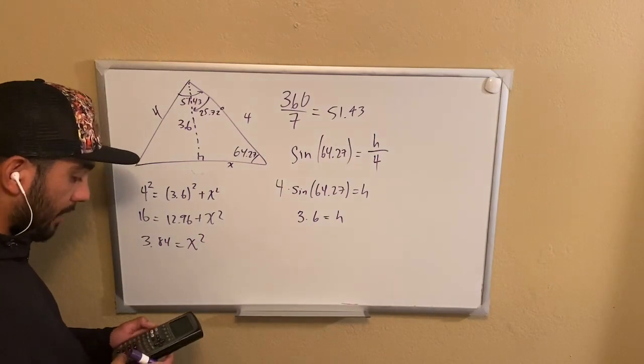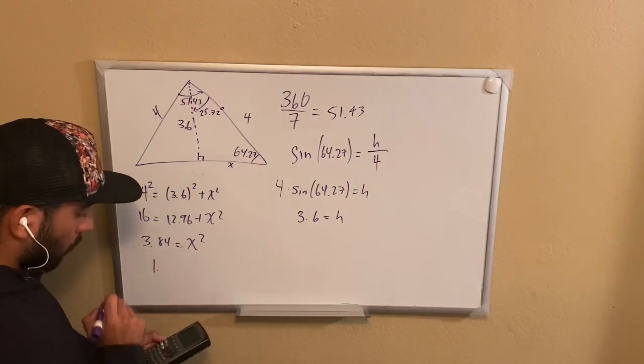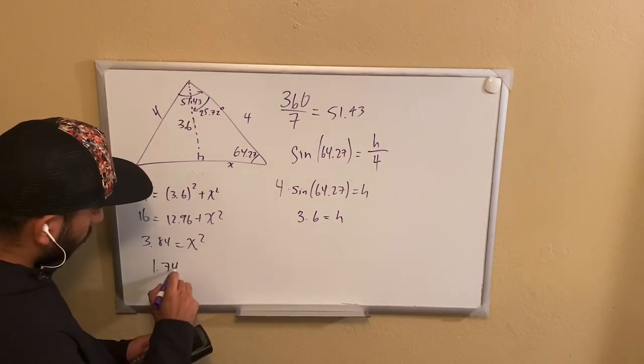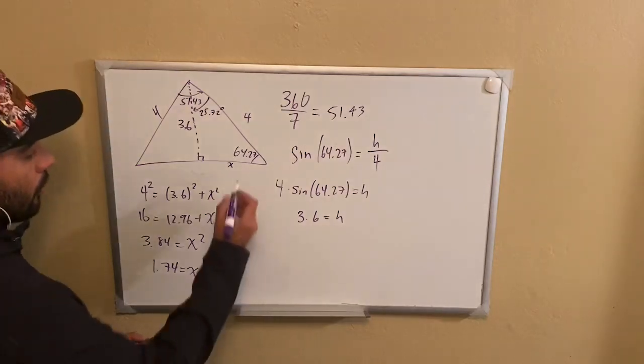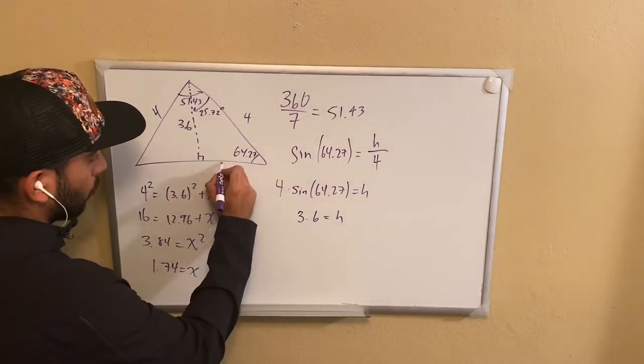That's going to give us 3.04 is equal to X squared. Now, if we take the square root of that, that's going to give us 1.74, which is equal to X.